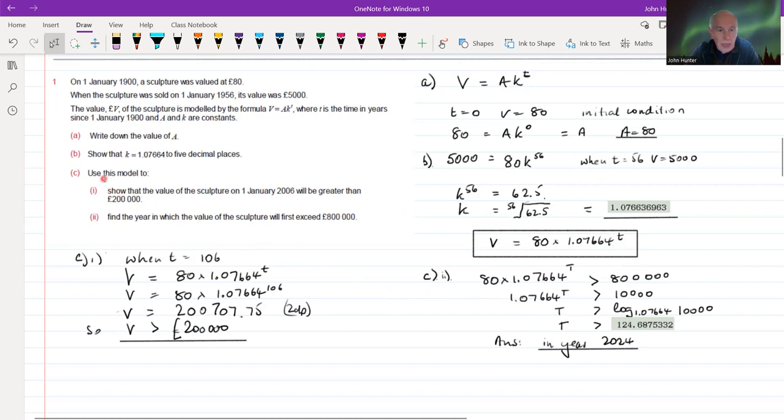So in part C, it says, use the model to show that the value of the sculpture on 1st of January 2006 will be greater than £200,000. So essentially, we're just using our equation, which is already explicit in V. Substitute T in: V equals 80 times 1.07664 to the power of 106. Pop that in your calculator, and that's going to give you this value, 200,707, which, of course, is greater than 200,000. So we've shown it's greater than 200,000.